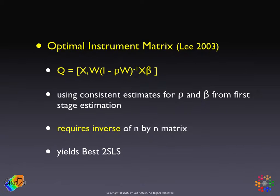We address this by implementing a two-step procedure. In the first step, we obtain consistent estimates for ρ and β. As we know, spatial two-stage least squares with the WX instruments is consistent, so we can use those. We then plug these into the expression W(I minus ρW) inverse Xβ and use these new matrices as the instruments in the second stage estimation.